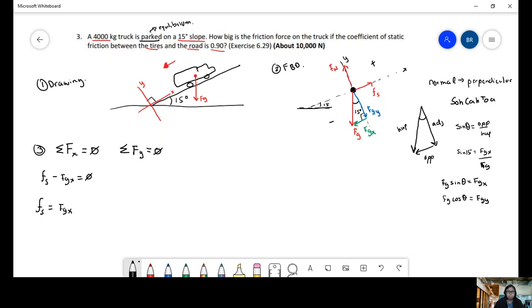And then we do the same for y. So in the y-axis, we have our normal force pointing up, force normal, minus the force of gravity pointing down. Force of gravity in the y-axis equals to zero. So force normal equals the force of gravity in the y.